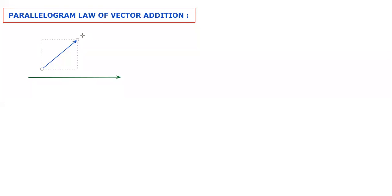This is the parallelogram law of vector addition. Suppose there are two vectors — this is vector P and this is vector Q. This is the parallelogram.